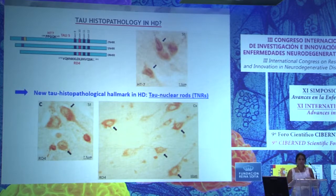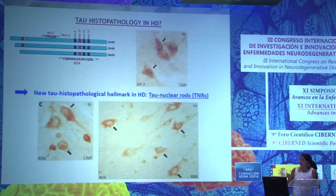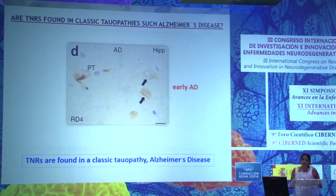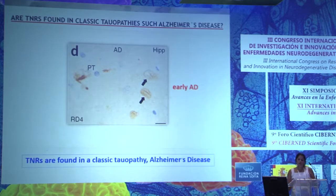The presence of this structure raised several questions. We wanted to know if we could find it in classical tauopathies like Alzheimer's disease. In a few cases of Alzheimer's disease we were able to find tau nuclear rods inside neurons in the hippocampus, and notably we found them more frequently in early cases of Alzheimer's disease.